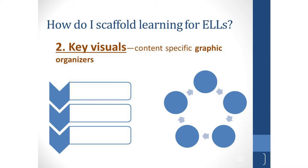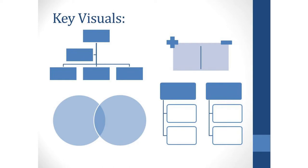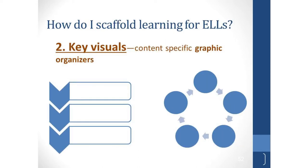The next strategy for scaffolding instruction is to use graphic organizers, also referred to as key visuals — such as a T-chart, a cycle diagram, a flowchart, story maps, timelines, and Venn diagrams. You can see a number of pictures here of different key visuals. Graphic organizers are often used in the classroom, but they're particularly beneficial for ELLs because they are a visual support that aids understanding of texts — a non-linguistic representation that enables students to see what is happening in addition to the words being used.